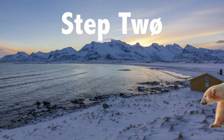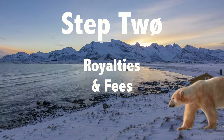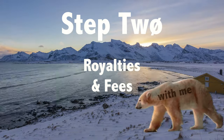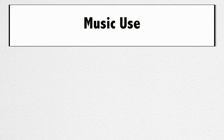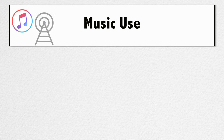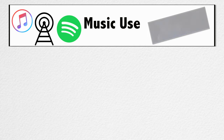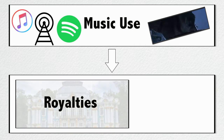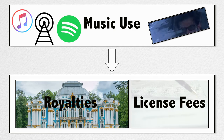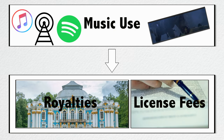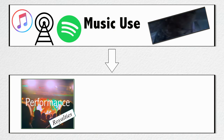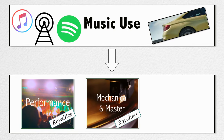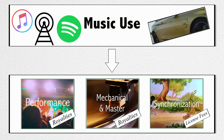Step 2: Royalties and fees. The exploitation, reproduction, and licensing of music generates money in the form of royalties or license fees. The three primary types of income are performance royalties, mechanical royalties, and master and synchronization fees.